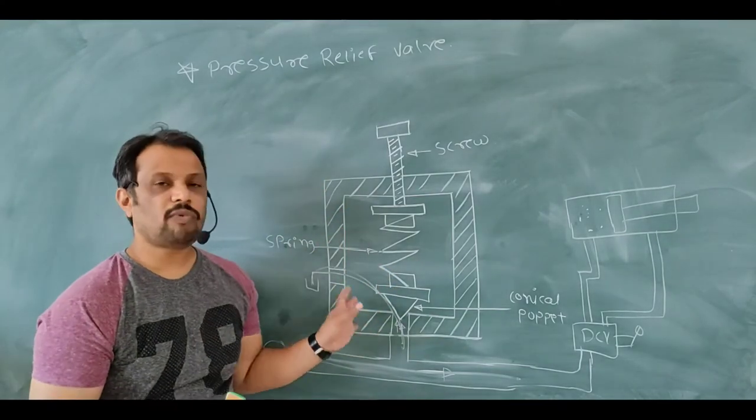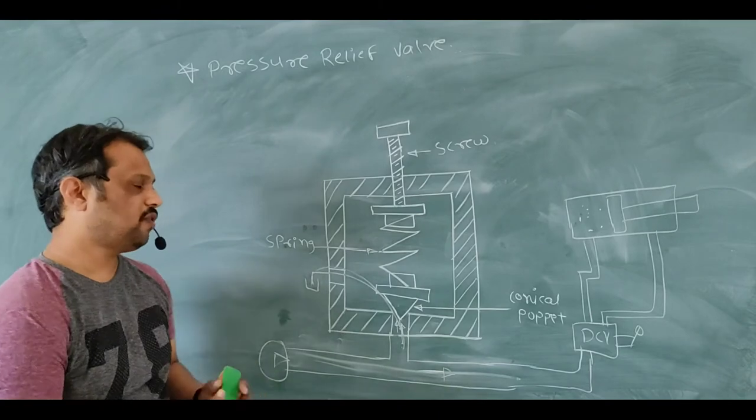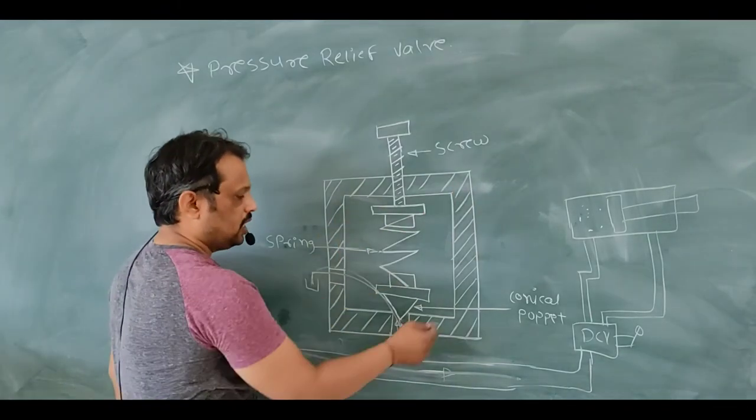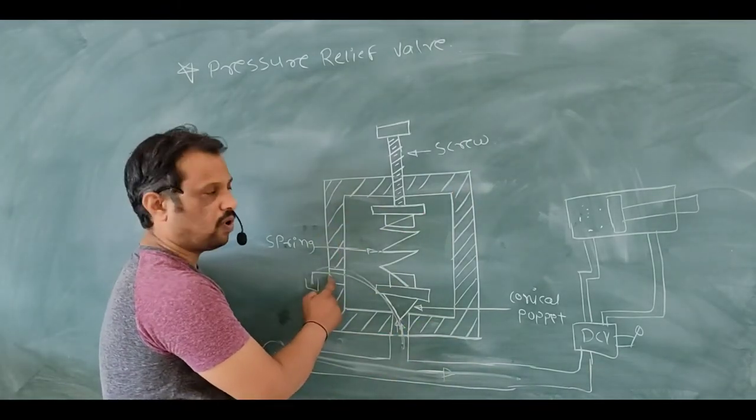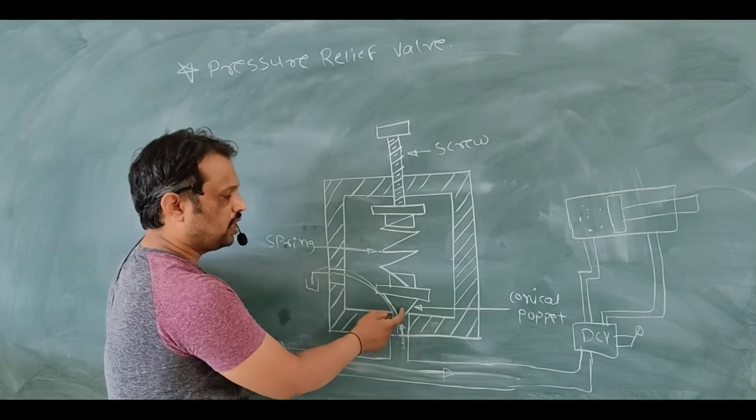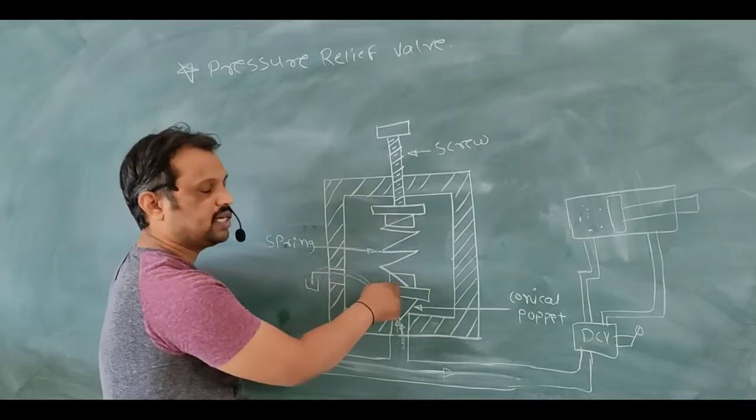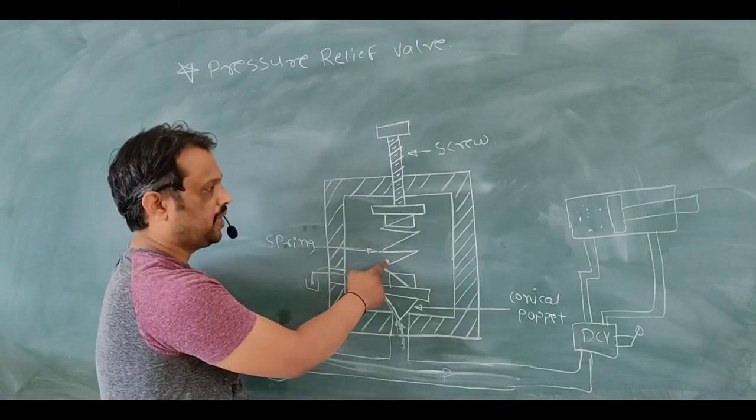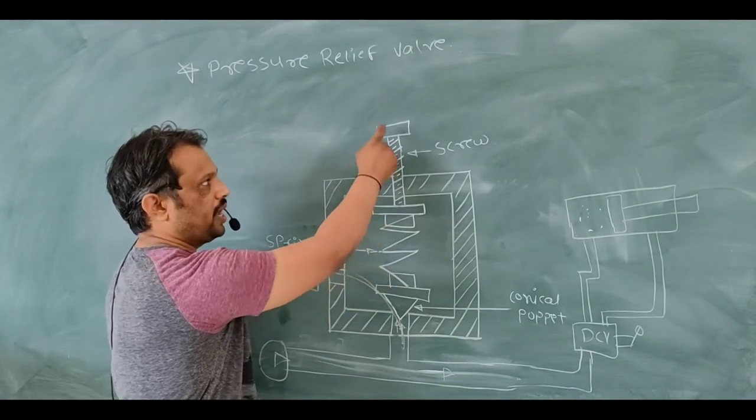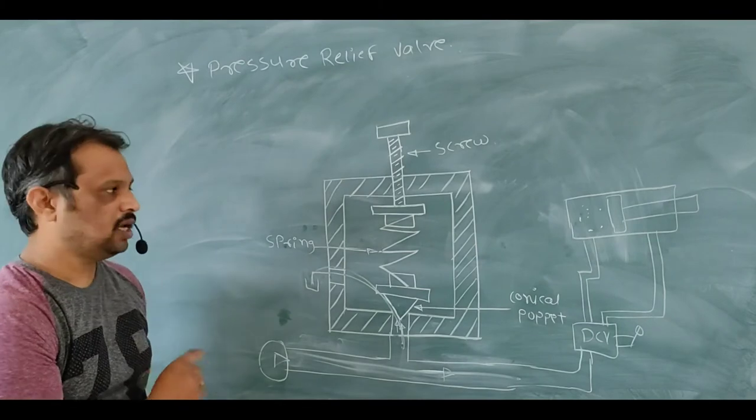This is the diagram of PRV. First of all construction, there is a valve body, there are two openings to the valve body, after that there is one conical poppet and two plates are there. These two plates are placed with spring, there is one adjusting screw and handle, this is the construction.